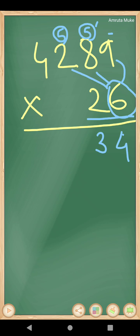So now, 6 twos are 12 and 12 plus this 5, 17. 17, 7 here, 1 I am carrying over here. 6 fours are 24, 24 and 1, 25.